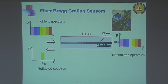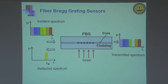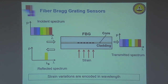The grating obeys Bragg's diffraction theory, and it has been shown that the peak wavelength of reflection — known as the Bragg wavelength — is a function of the effective refractive index and the period of the grating. But how do we use this element as a sensor? If the grating is subjected to a strain, it changes the grating period and the effective refractive index, thereby changing the Bragg wavelength — so now the grating is reflecting a different color. In some sense, the strain variations are encoded in the wavelength of the reflected light. This is attractive because information encoded in wavelength is generally impervious to noise and can be transmitted over long distances without being corrupted by noise.